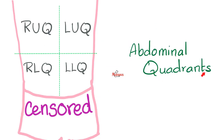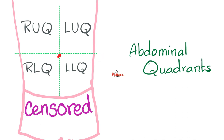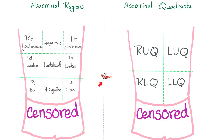The four abdominal quadrants are easier: right upper quadrant, left upper quadrant, right lower quadrant, left lower quadrant. This is a vertical line that hits the umbilicus — the midline of your body, the median line. And a transverse line that intersects here also with your umbilicus. Now let's put both of them in the same slide.